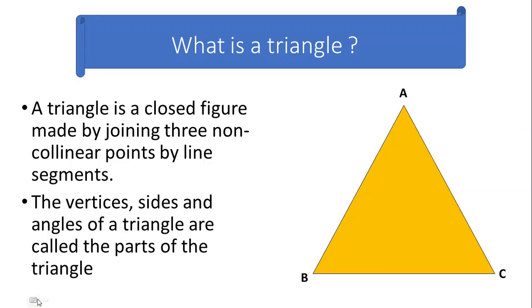Before we begin with the chapter, let's see what exactly is known by a triangle. Whenever you try to join three non-collinear points which are provided on a plane, you get a closed figure with three sides which is called as a triangle. Basically, a triangle is a closed figure which is formed when you join three non-collinear points.